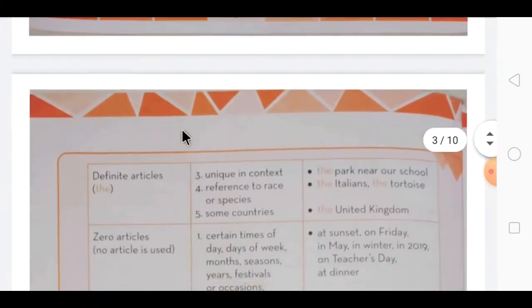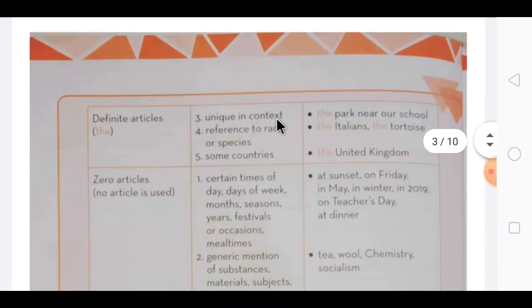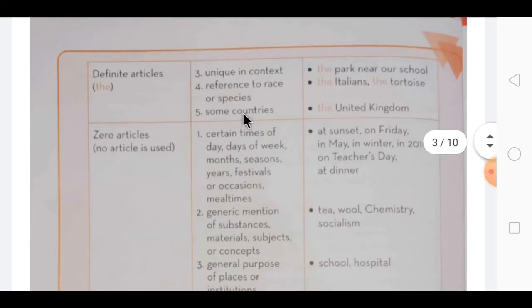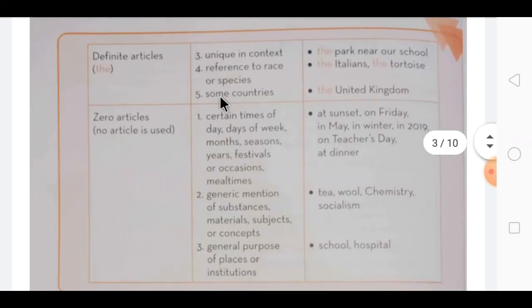Come to next page children. Third point is unique in context, means unique such that in your surrounding area there is only one such thing. So that is also called unique. Then fourth one, reference to race or species. And sometimes before some countries' names we use the.